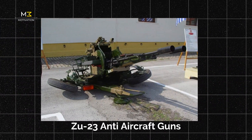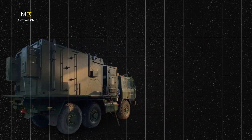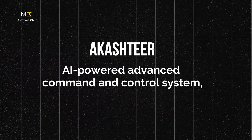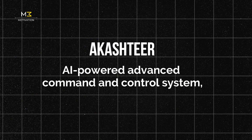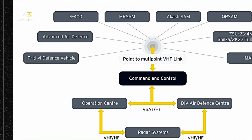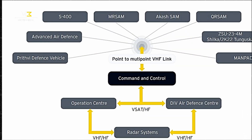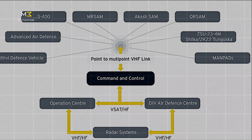The key factor behind this success was Akash TIR, an AI-powered advanced command and control system that integrates all these weapons into a single, seamless air defense shield.